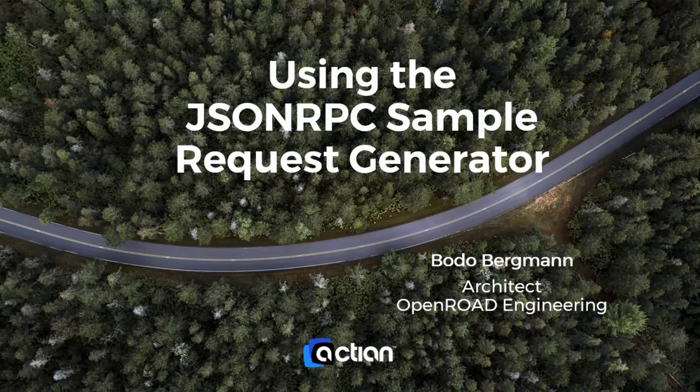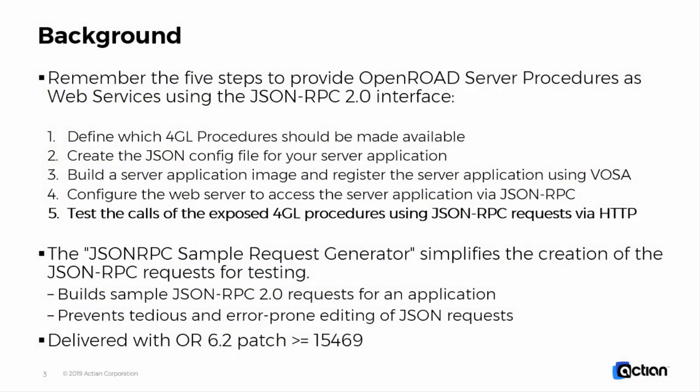Let's have some background first. If you remember the steps to provide OpenROAD server procedures as web services using the JSON RPC 2.0 interface, you will possibly remember that after you have set up all the other things, you want to test the calls of the exposed 4GL procedures. That is exactly what the JSON RPC sample request generator utility is designed for.